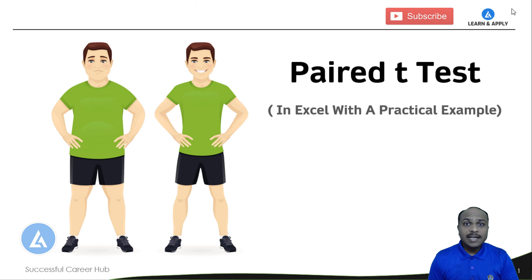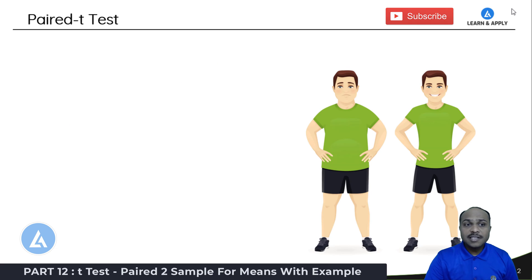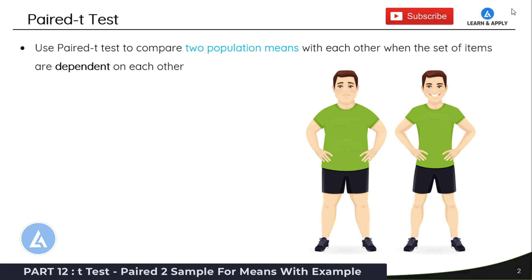This is also called t-test, Paired two samples for means. Now let's first understand what is this Paired t-Test and what is the application of this. Use Paired t-Test to compare two population means with each other when the set of items are dependent on each other.